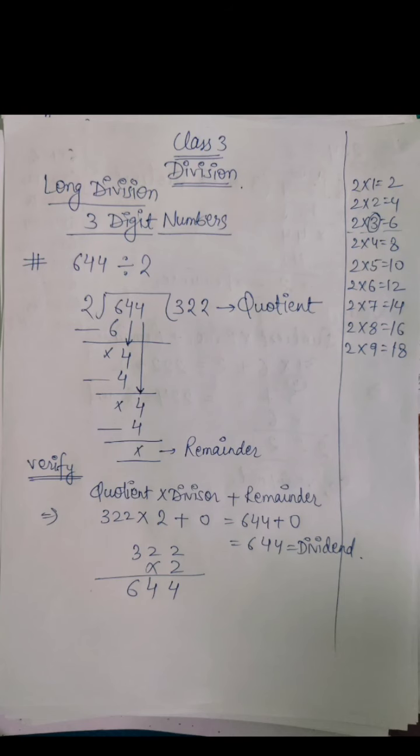So let's start with this question. 644 divided by 2. This is again an example I have taken myself. Now how we will divide this? First step: what we do? 644 we write inside the box, 2 we write outside the box. Now we will start dividing.